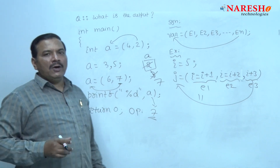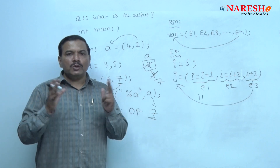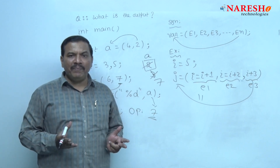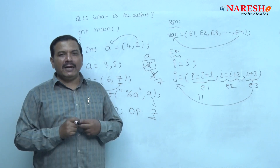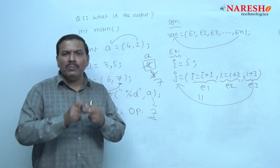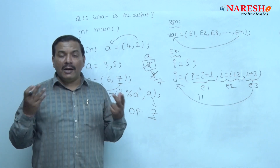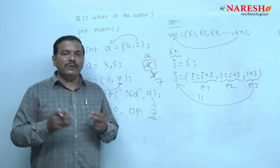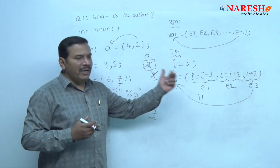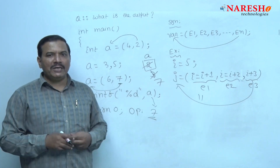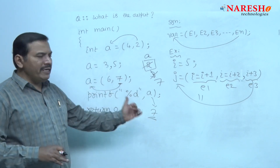This is the working of the comma operator. Comma is used in many places inside a program: in separating variable names in variable declarations, in the for loop for separating initialization or update expressions, and for separating multiple expressions. That is the importance of the comma operator. Hence, the final result of this code is 7.